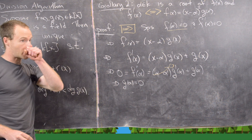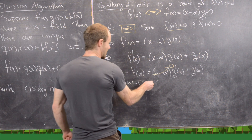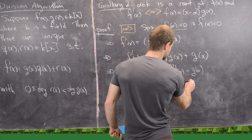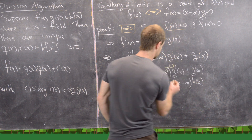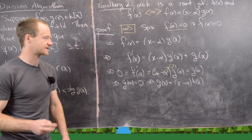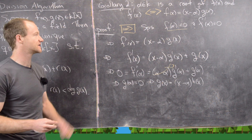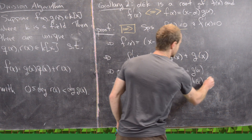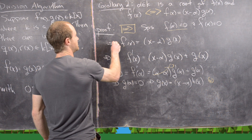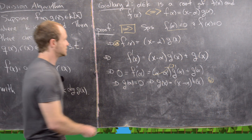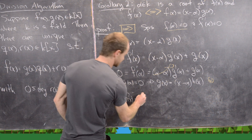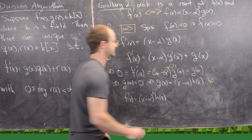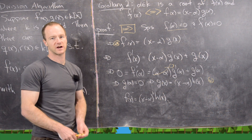By our previous corollary, g(α) = 0 implies g(x) = (x − α)·h(x). Substituting back into f(x) = (x − α)·g(x) gives f(x) = (x − α)²·h(x). That finishes the proof of the forward direction.